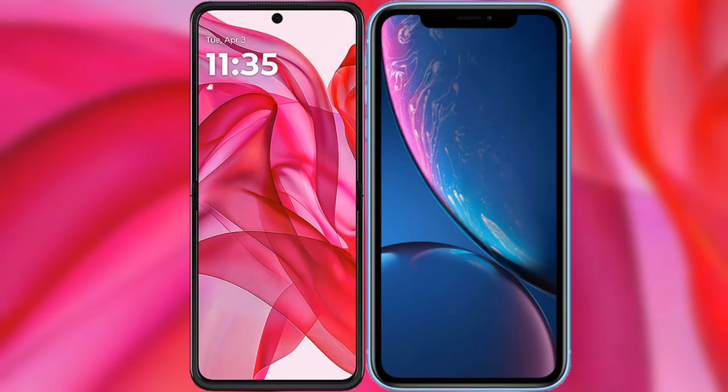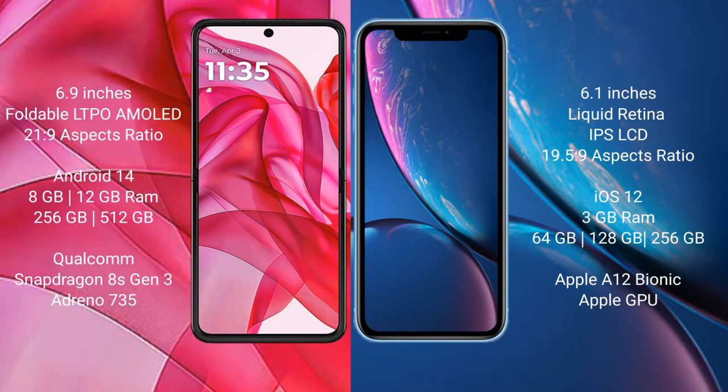I will compare the new Moto G 5G Ultra with the iPhone XR. The Moto G 5G Ultra comes with a 6.9-inch Full HD+ AMOLED display with an aspect ratio of 20:9. The iPhone XR has a 6.1-inch Liquid Retina IPS LCD display with an aspect ratio of 19.5:9.